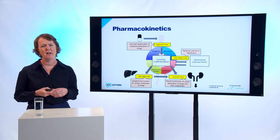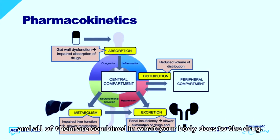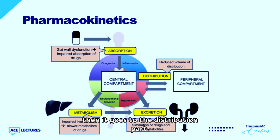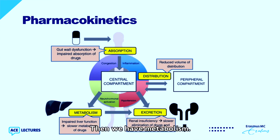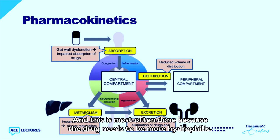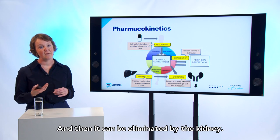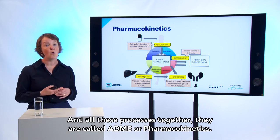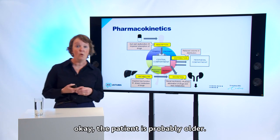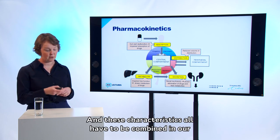What is pharmacometric modeling? First, pharmacokinetics is important. With pharmacokinetics you have different processes in your body — what your body does to the drug. You have absorption, then distribution through the body, then metabolism, most often in the liver, where the drug is metabolized to a more hydrophilic form so it can be eliminated via the kidney. All of these processes together are called ADME or pharmacokinetics. It's important to know that an older patient will have a different pharmacokinetic profile than younger patients, and these characteristics all have to be combined in the pharmacokinetic model.